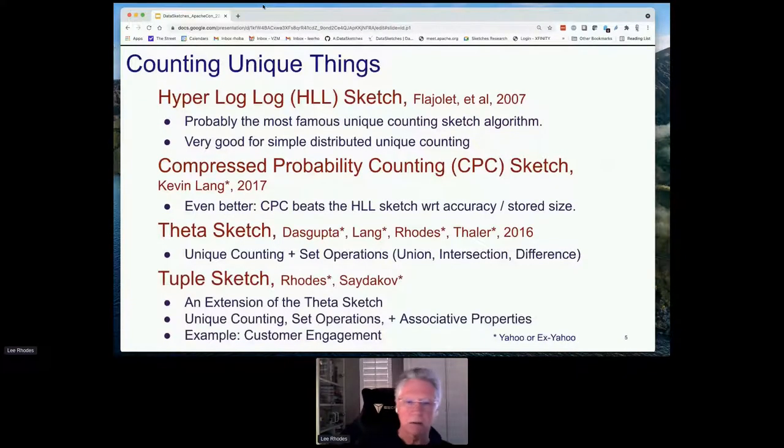The first major category of sketching algorithms we have are counting unique things. We have a number of different algorithms in this category with different trade-offs and properties. There's the famous HyperLogLog sketch, developed by Philippe Flajolet in 2007. He was a French mathematician. It's probably the most famous unique counting sketch algorithm, very good for simple distributed unique counting, but it does not offer set operations. You can't do intersections with it, but you can do merging. It's very fast and very compact for that purpose.